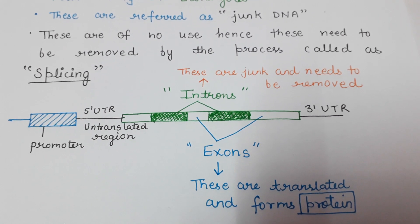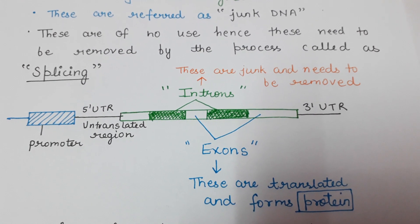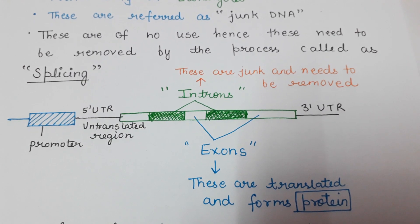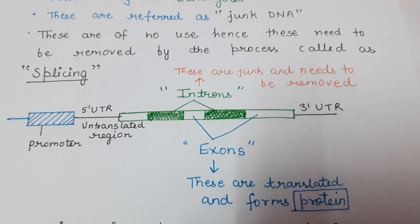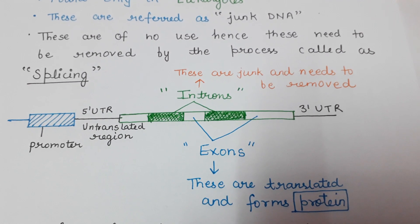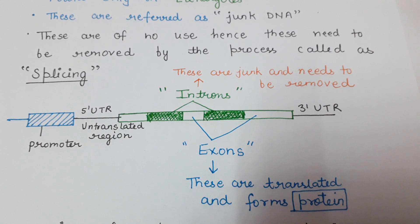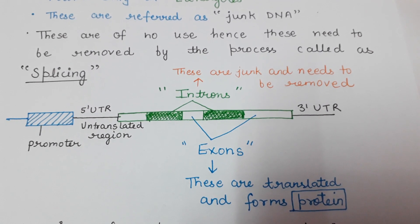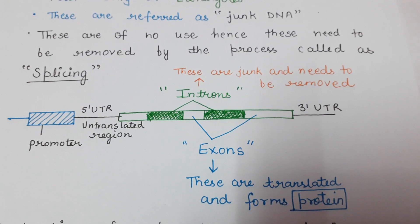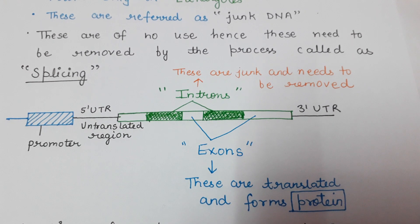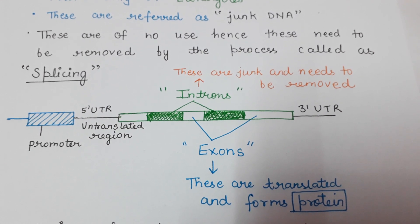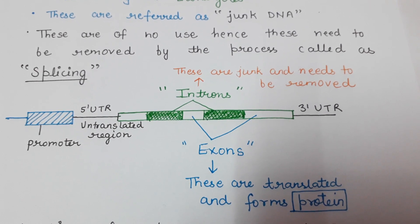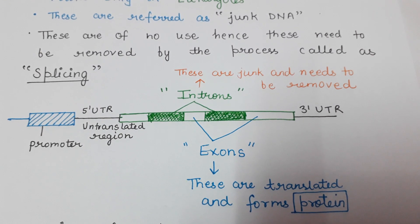I am showing you a diagram of a portion of DNA showing introns and exons. A DNA segment typically consists of a promoter region, which enhances the transcription level. Then there are the 5' UTR and 3' UTR — the five prime and three prime untranslated regions. These regions do not undergo translation.